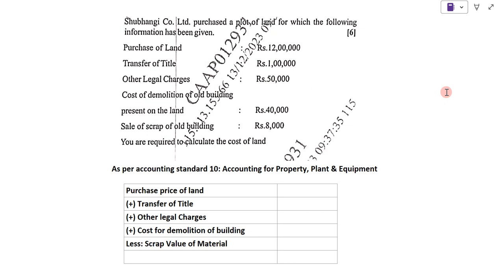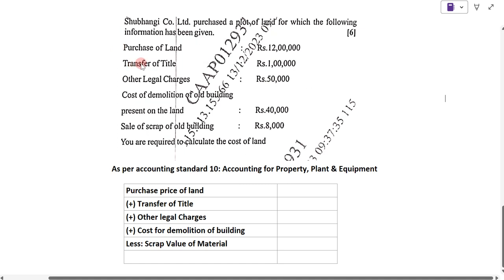This example was asked in SPPU examination December 2023 for 6 marks. The example is: Shubangi Company Ltd purchased a plot of land for which the following information has been given. The purchase of land is Rs. 12 lakh. Title of transfer is Rs. 1 lakh. Other legal charges is Rs. 50,000. The cost of demolition of old building present on the land is Rs. 40,000. And sale of scrap of old building is Rs. 8,000.